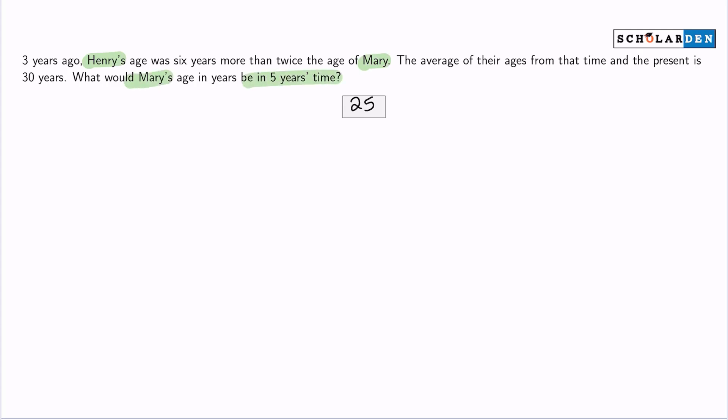One thing I can do is represent their current ages with variables so I can create equations to figure this out. I'll say Mary's age, I'll label that with M. And for Henry's age, I'll label that with H.